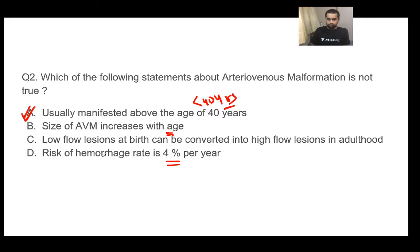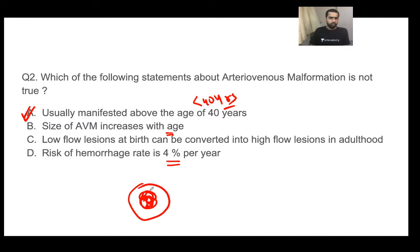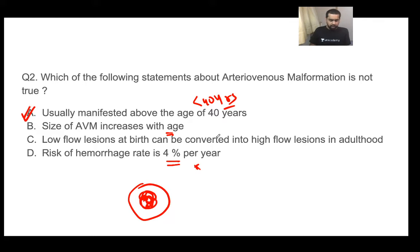AVMs present in adulthood around 20-30 years of age. As the AVM grows, a lot of blood supply is directed toward it, so the adjacent brain undergoes ischemic changes, causing convulsions and headache. The blood supply meant for that brain area is directed toward the AVM, causing a relative decrease in flow to the adjacent parenchyma. In childhood it may be a low-flow lesion, but over time it converts to a high-flow lesion in adulthood. The rate of hemorrhage is 4% per year.